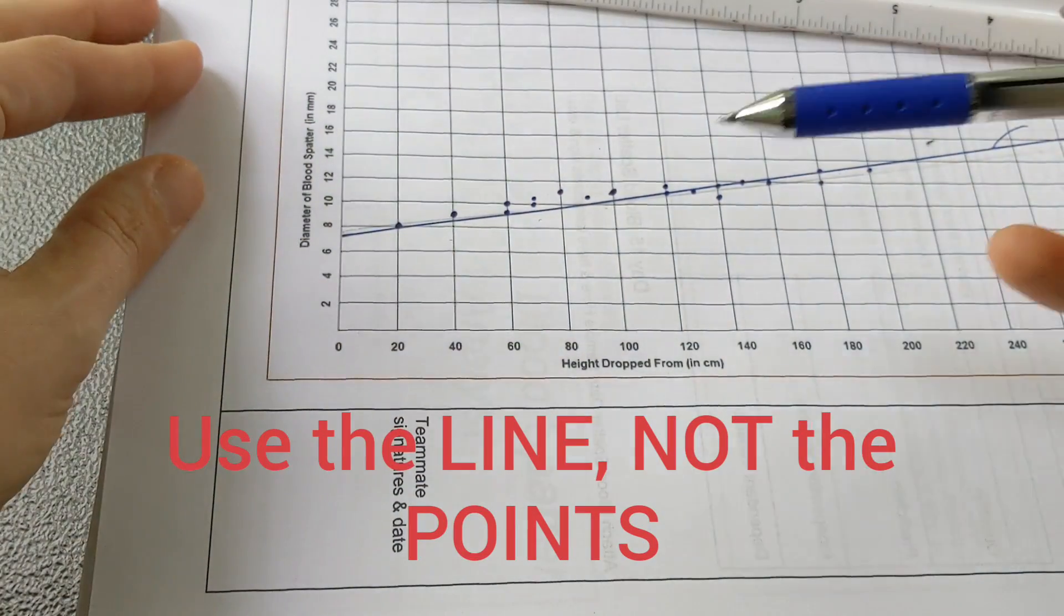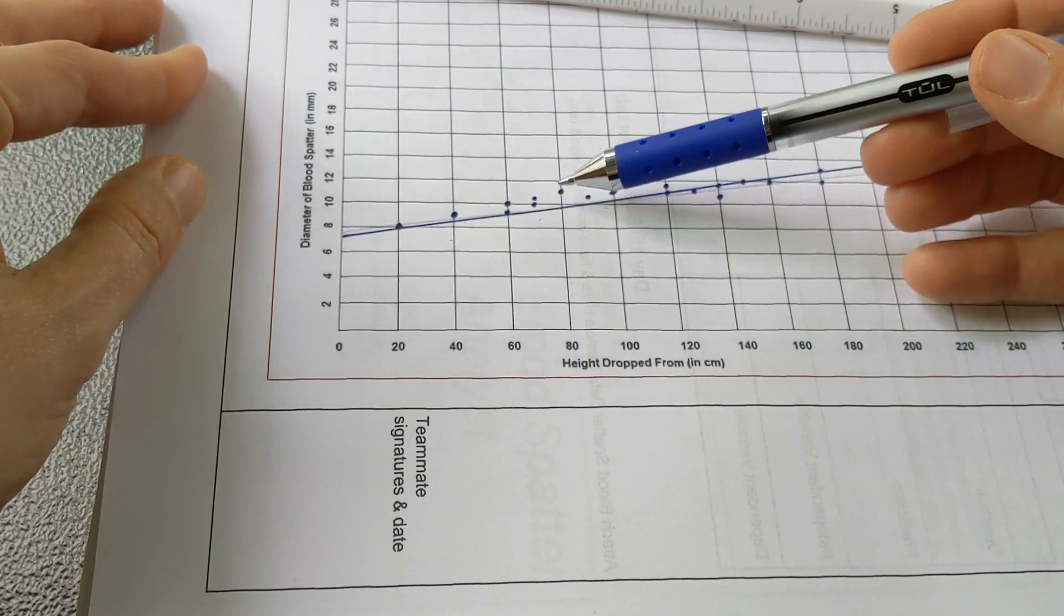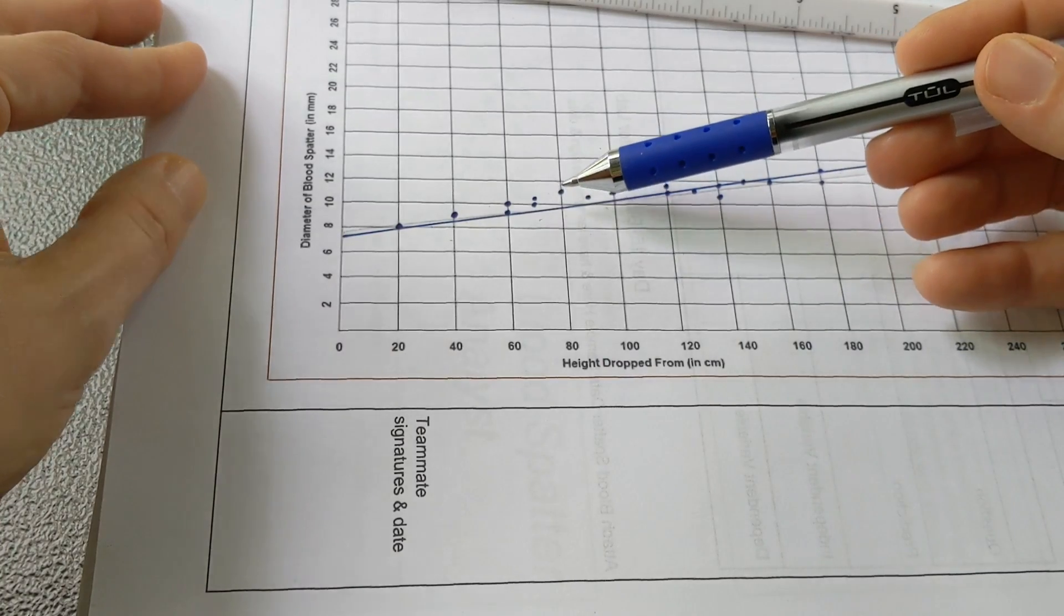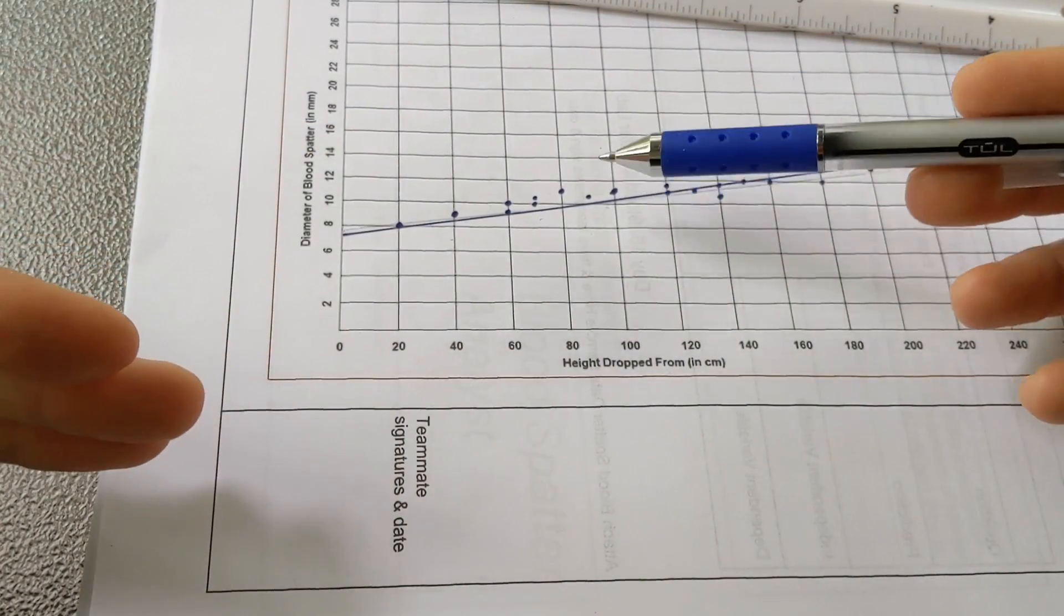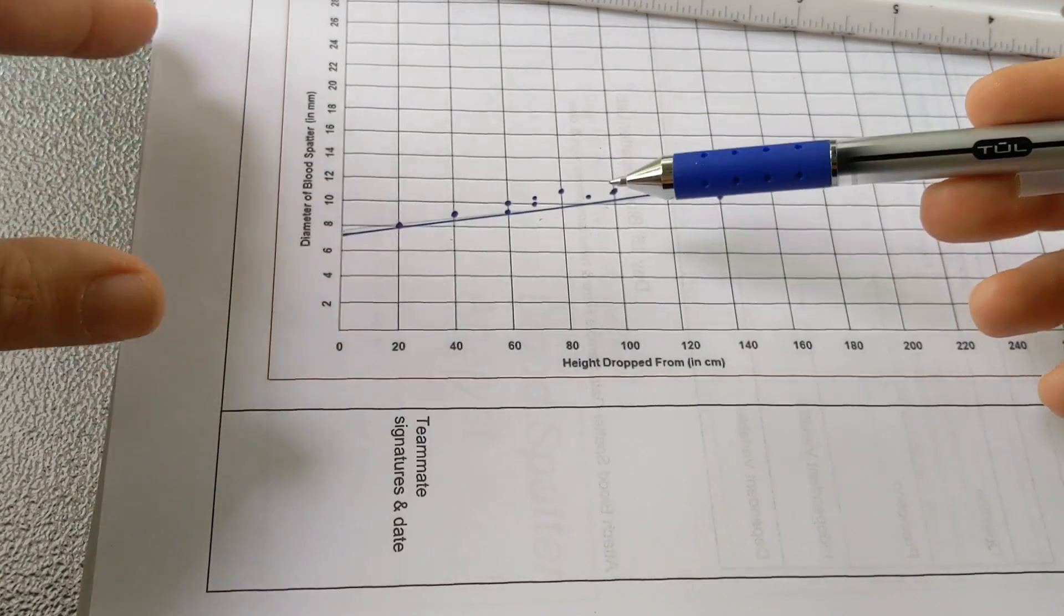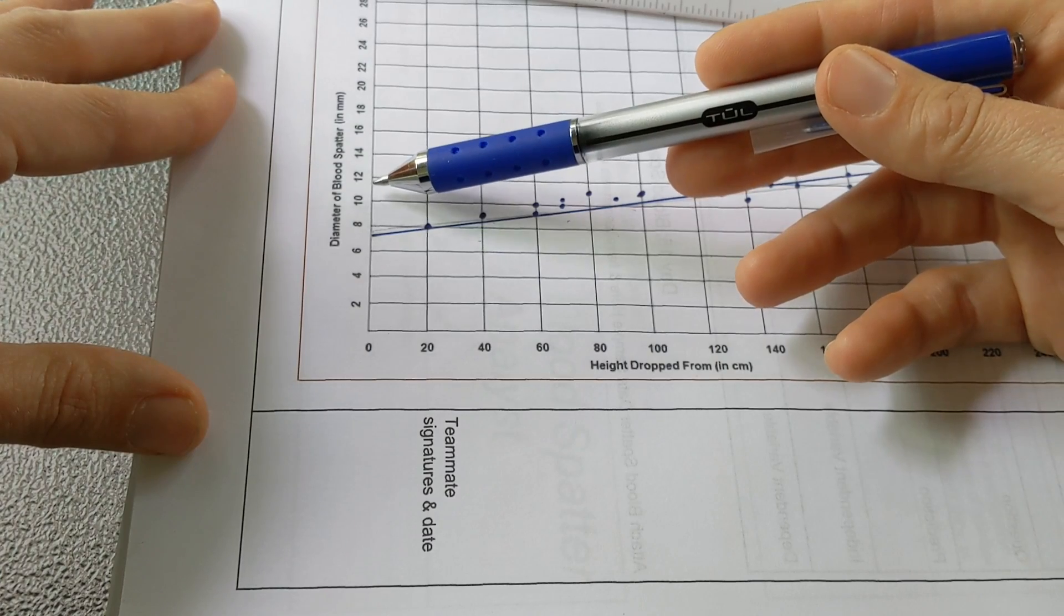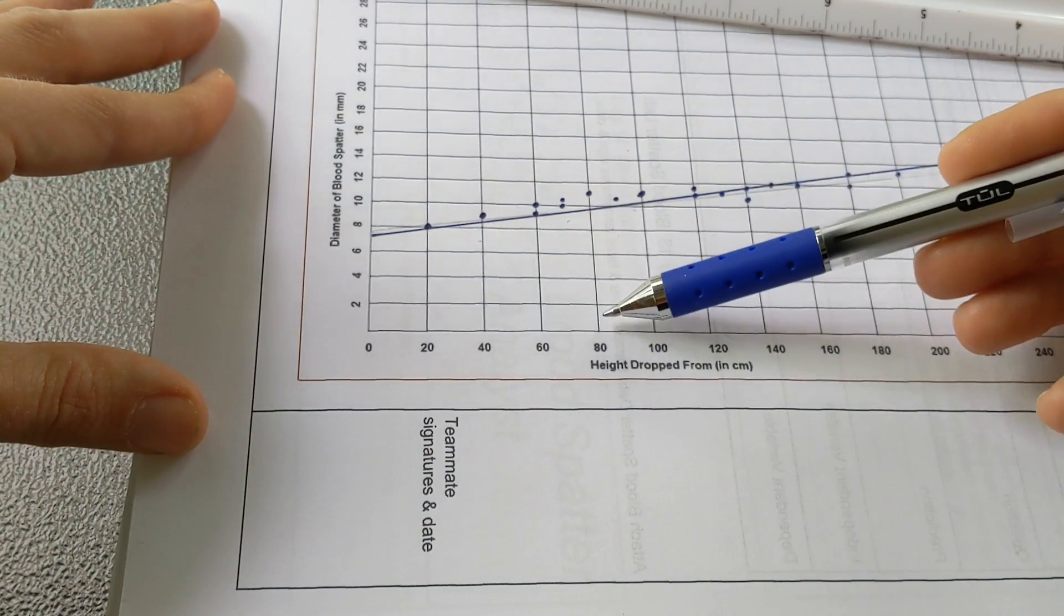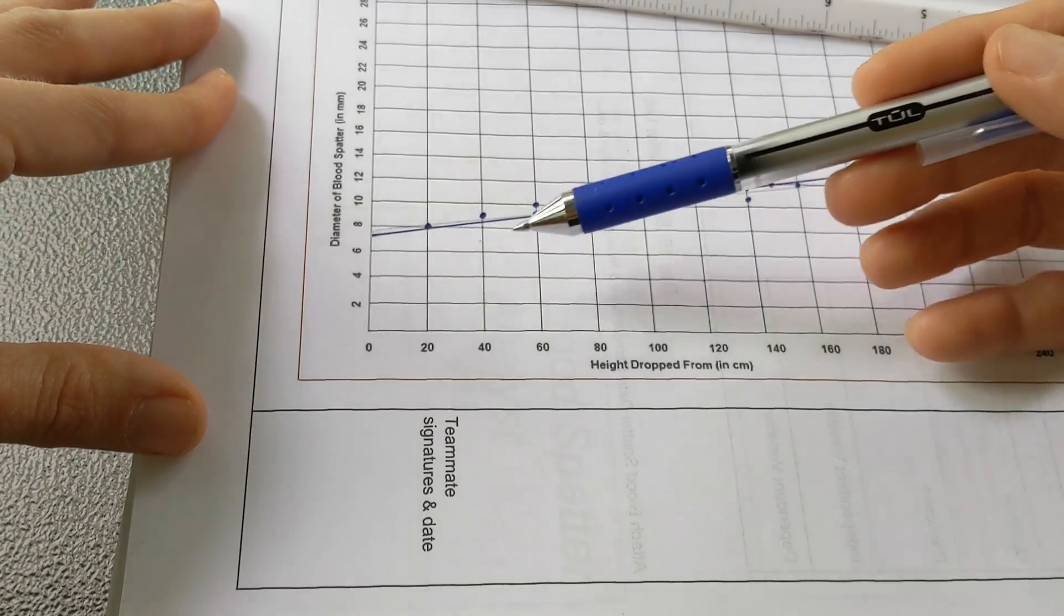The biggest thing you have to be careful of is once you've made your best fit line, you ignore each individual data point, because the trend of all the data is much more meaningful than one individual data point. I wouldn't want to go from 11 millimeters in diameter to this data point and read down to 80. I want to always use this best fit line.